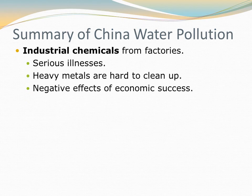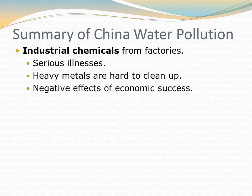Most of this water pollution in China is coming from industrial chemicals from those factories. With the booming economy, they're producing a lot of stuff — a lot of stuff that we use here in America, in fact. The problem is those industrial chemicals very often end up in the rivers, and they can cause some pretty serious illnesses — not a get-sick-for-a-week-and-get-better kind of illness. We're talking serious, permanent illnesses. Some of those chemicals are heavy metals, which are almost impossible to clean out of a river. So we're seeing some of the negative effects of China's economic success.